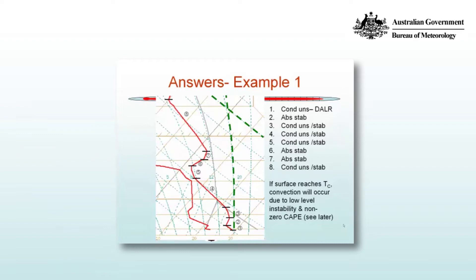Layers 3 through 5 are all conditionally unstable. Layers 6 and 7 are absolutely stable — they represent inversions. Layer 8 is conditionally unstable. The representative mixing ratio and potential temperature lines have been added, and you can see that a convective temperature will produce a level of free convection and CAPE will be realised. It's going to be a little bit warmer than shown. The convective temperature is the temperature which will provide parcels being heated to the level of free convection, and it looks very much like sufficient CAPE exists for convection to occur.